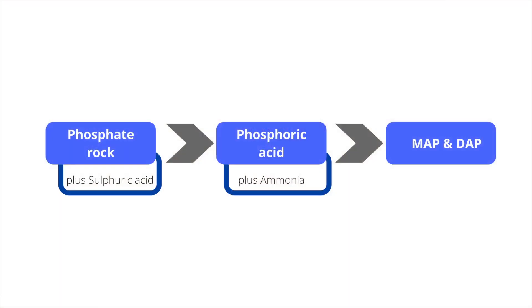Most phosphate rock is converted into phosphoric acid, which is an intermediate that is then further transformed into either industrial or food products, as well as fertilizers such as MAP and DAP. The A in MAP and DAP is ammonium, which comes from ammonia. So we've got rock reacting with sulfuric acid to produce phosphoric acid, which is then reacted with ammonia to produce mono ammonium or diammonium phosphate.